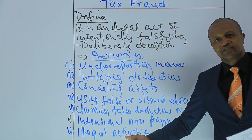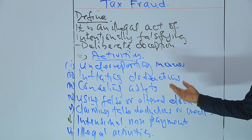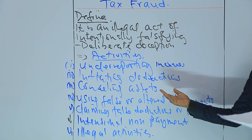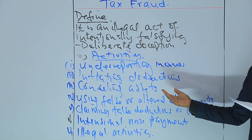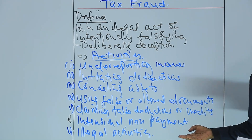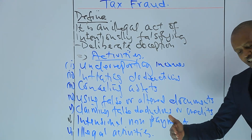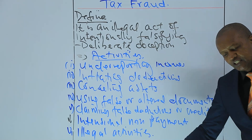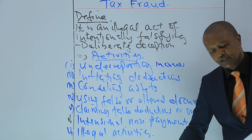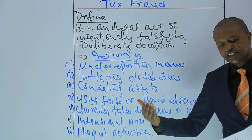Tax avoidance is a legal practice of using the tax regime to find ways to reduce tax liability by staying within the law. The key elements or activities constituting tax fraud include deliberate deception against tax authorities, concealing assets, using false or altered documents, and claiming false deductions or credits. The second part of the question is: how does tax fraud differ from tax avoidance?